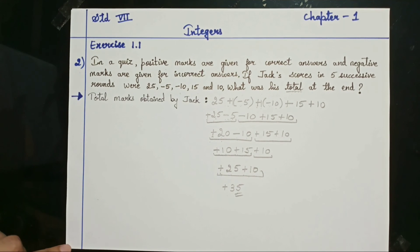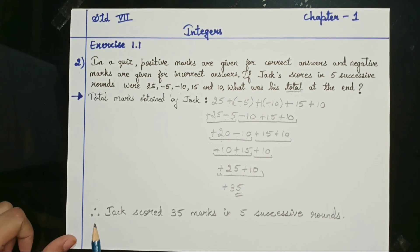So finally you can write something like this. Therefore Jack scored 35 marks in 5 successive rounds. I hope you have understood the sum.